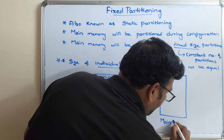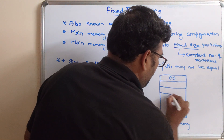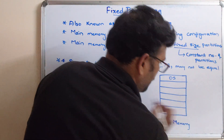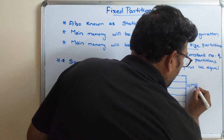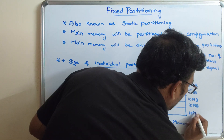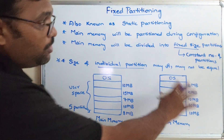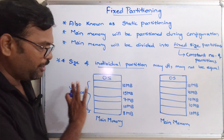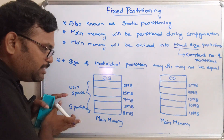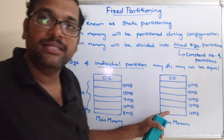Another possibility: let us say this is a main memory. The first part of main memory is the operating system. For example, here we have 10 MB, 10 MB, 10 MB, 10 MB, and 10 MB - so here also we are having 5 partitions and each and every partition is having the same size. This also comes under fixed partitioning. The difference between the two cases is that in the first case individual partition sizes are not equal, and in this case each and every partition size is equal.